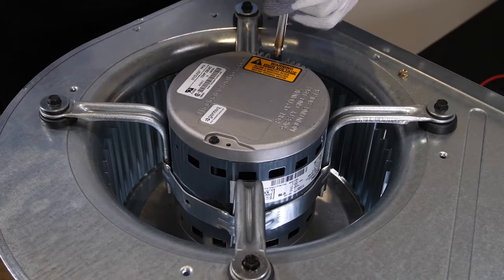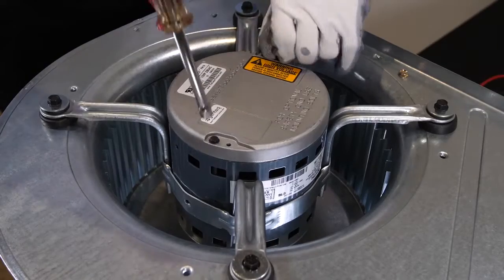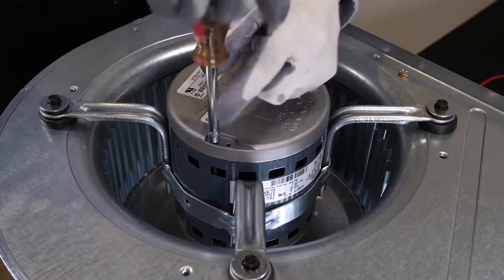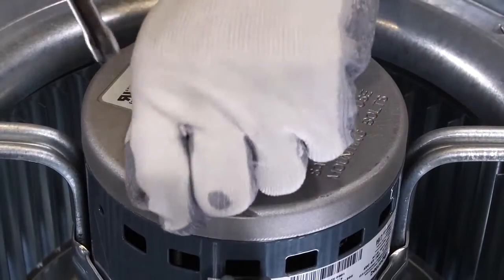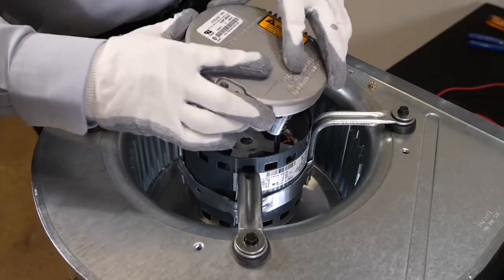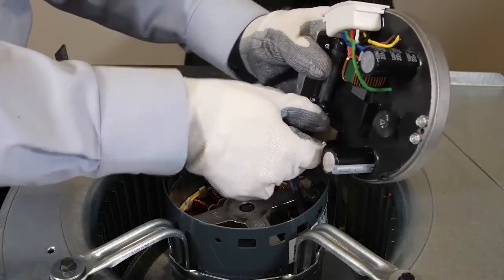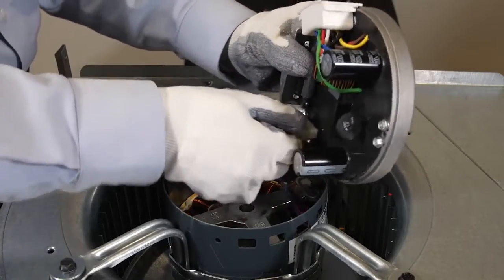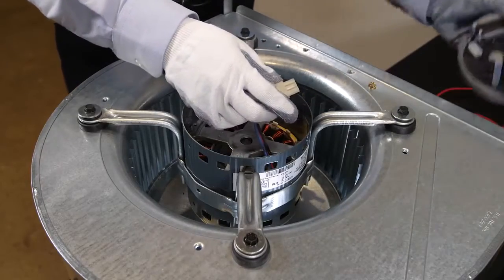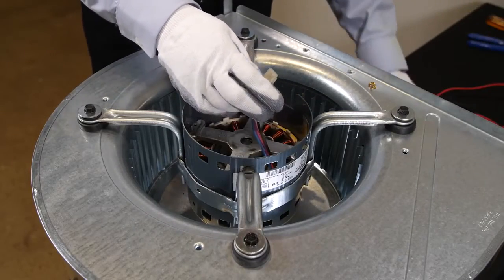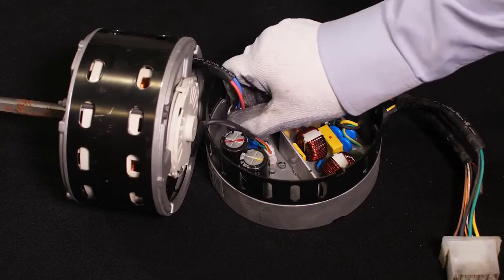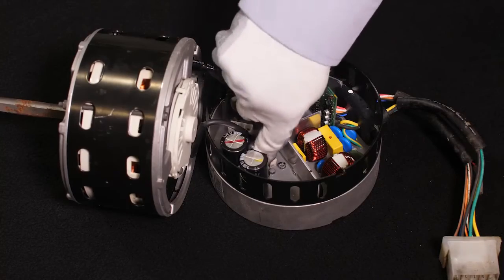Typically, the control module can be removed without removing the motor from the blower assembly. Remove the two control module mounting screws and separate the control module from the motor. Disconnect the three-pin motor connector from the existing control and be careful to depress the latching mechanism before pulling the connector away from the control. Avoid pulling the wires. Depending on which type of tap-select ECM motor you have, you may have an additional plug to remove.